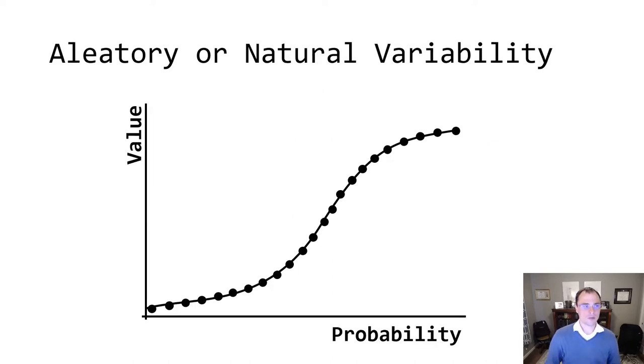When talking about aleatory uncertainty, what we're trying to describe is something that spans a probability range. So you can think of this as flow or damage.